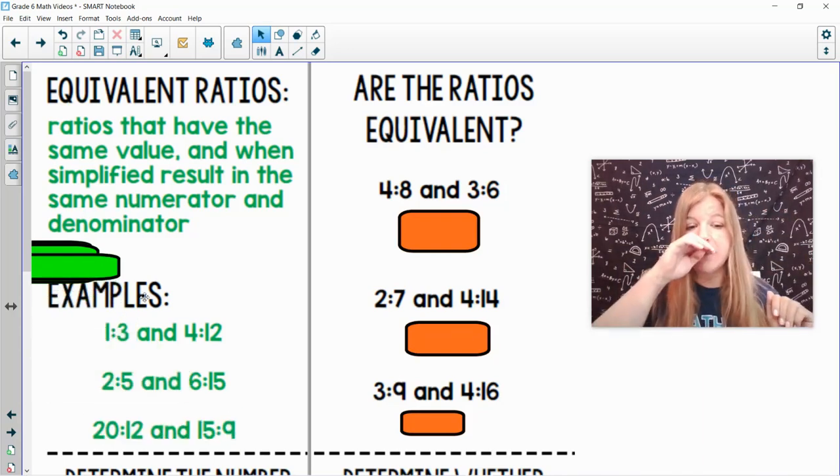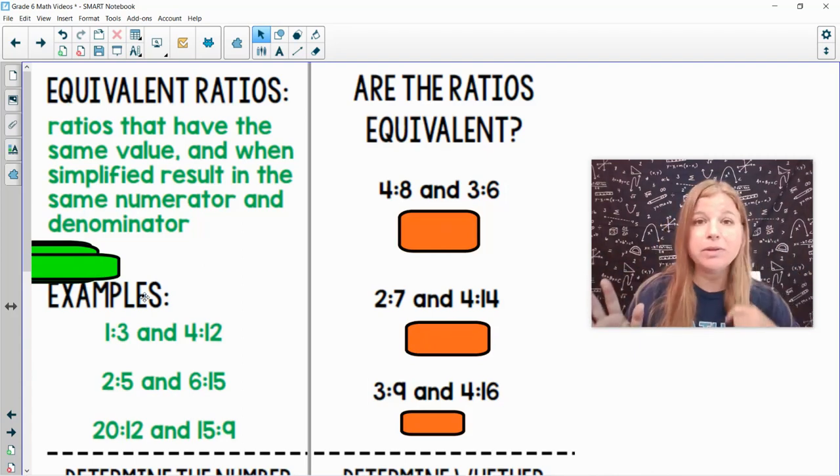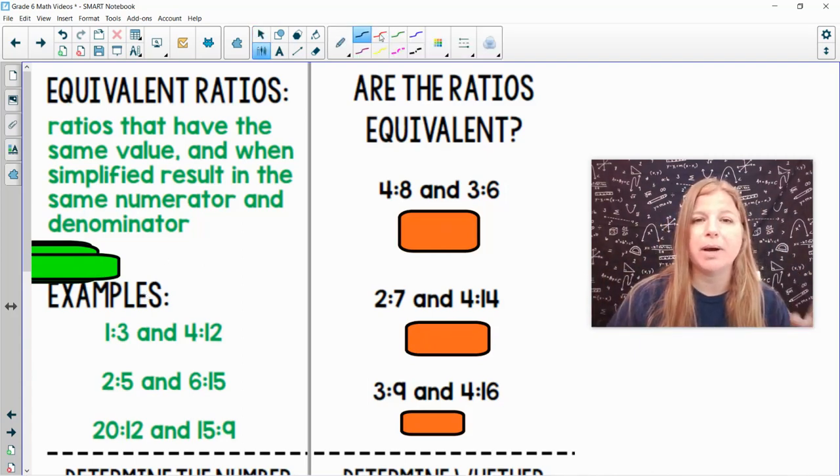And the last example, 20 to 12 and 15 to 9. Now both of these are not simplified. 20 to 12, well they're both divisible by 4. So if I simplify them both by 4, I would get 5 to 3. And then if I take a look at 15 to 9 and I divide both of those by 3, 15 divided by 3 is 5, 9 divided by 3 is 3. So they're both the same ratio.